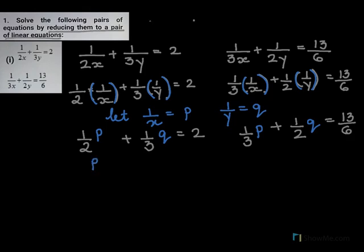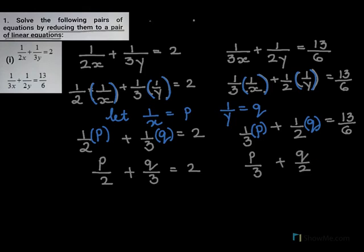Now this equation will turn as p, so here is where you replace 1/x you put p, 1/y you put q. So now the equation becomes p/2 plus q/3 is equal to 2 and here we have p/3 plus q/2 equal to 13/6.